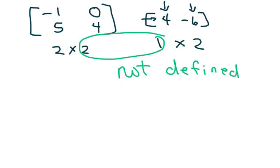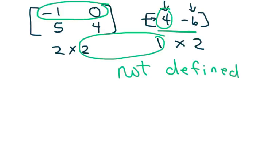To see why, if you tried to multiply, you'd take negative 1 times 4 plus 0, but there's no second column to multiply — it simply doesn't work. So always check your dimensions first.